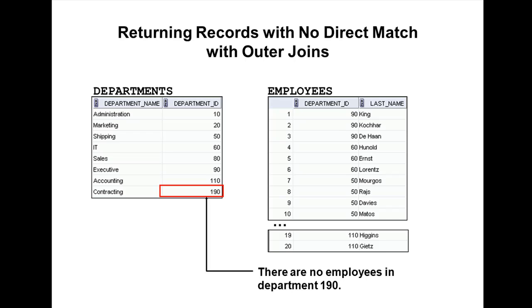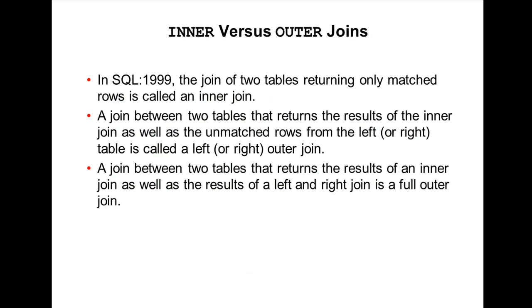This is one more example — there is no employee in contracting, so it's not showing any employees for department 919. This is the difference between inner and outer joins.